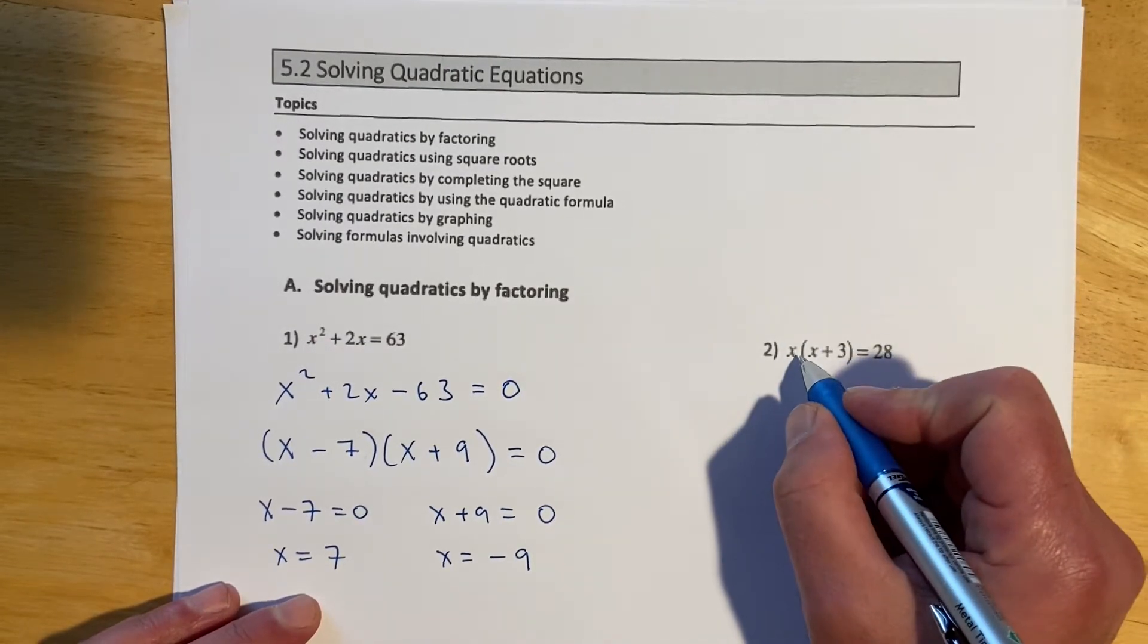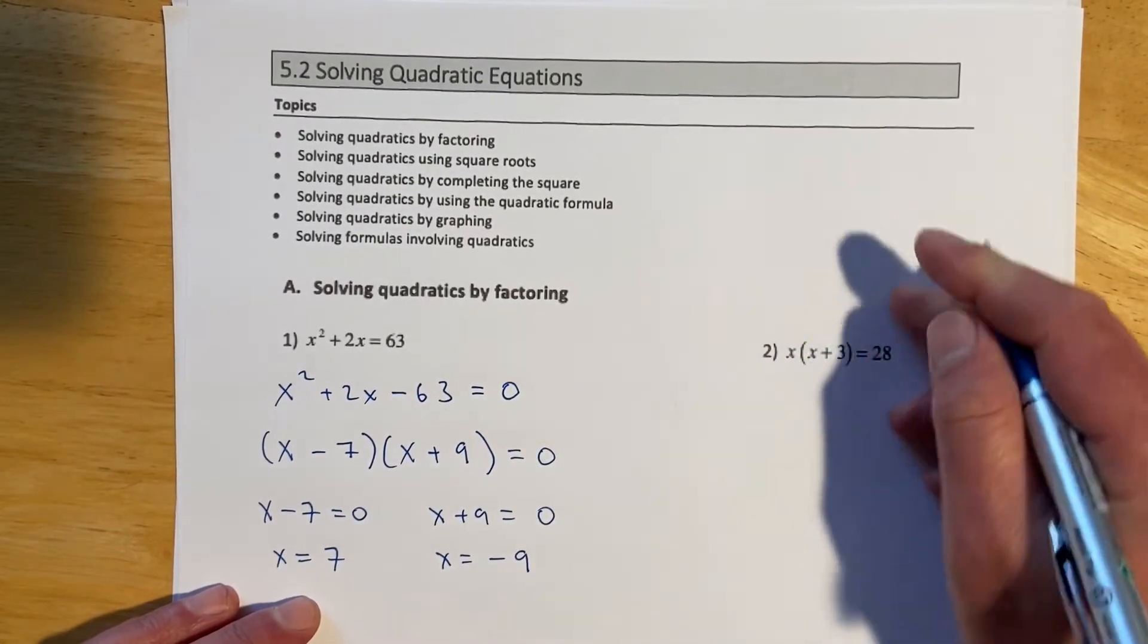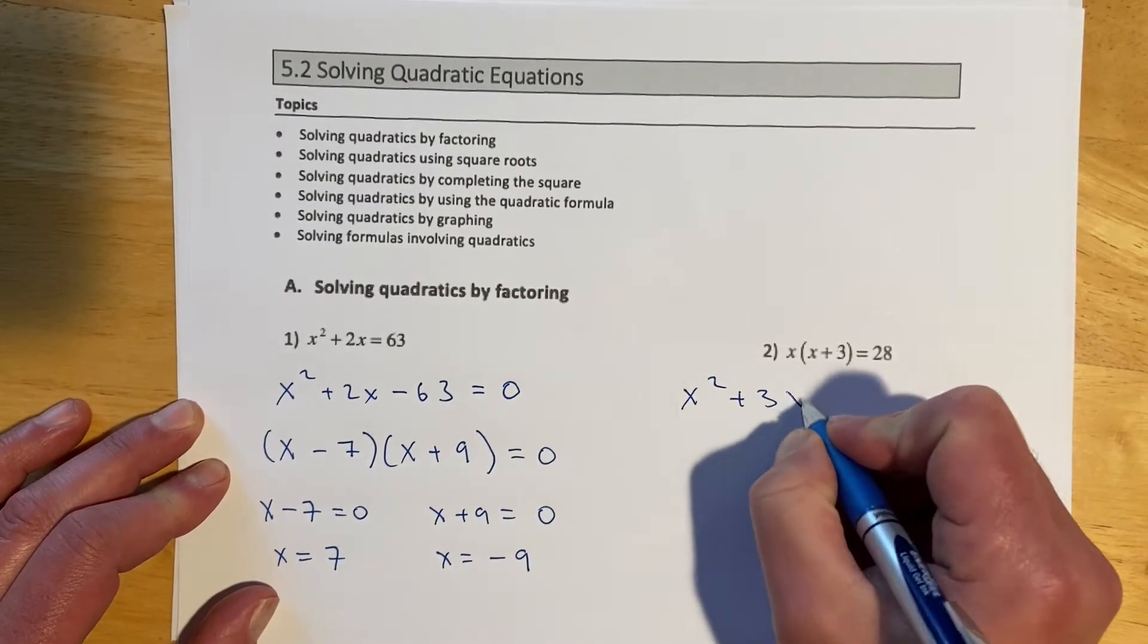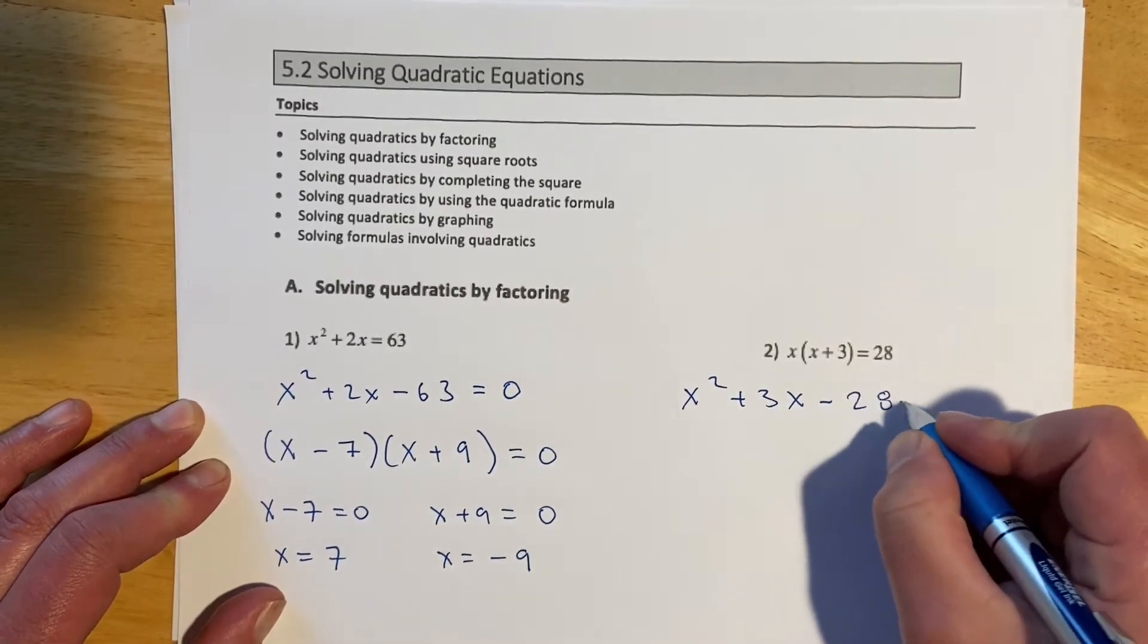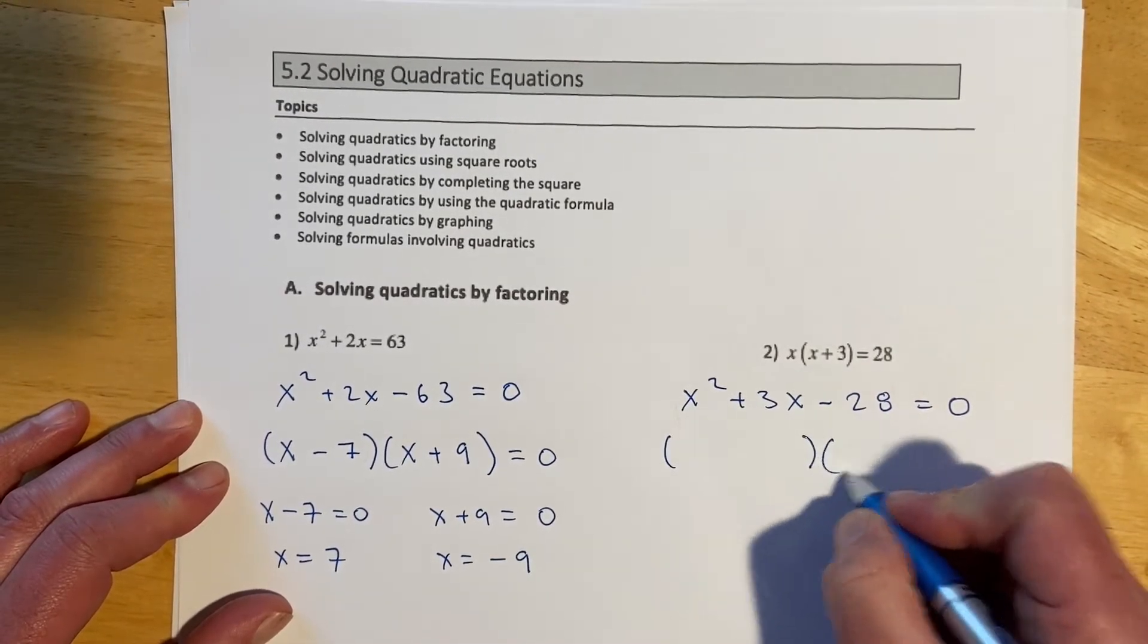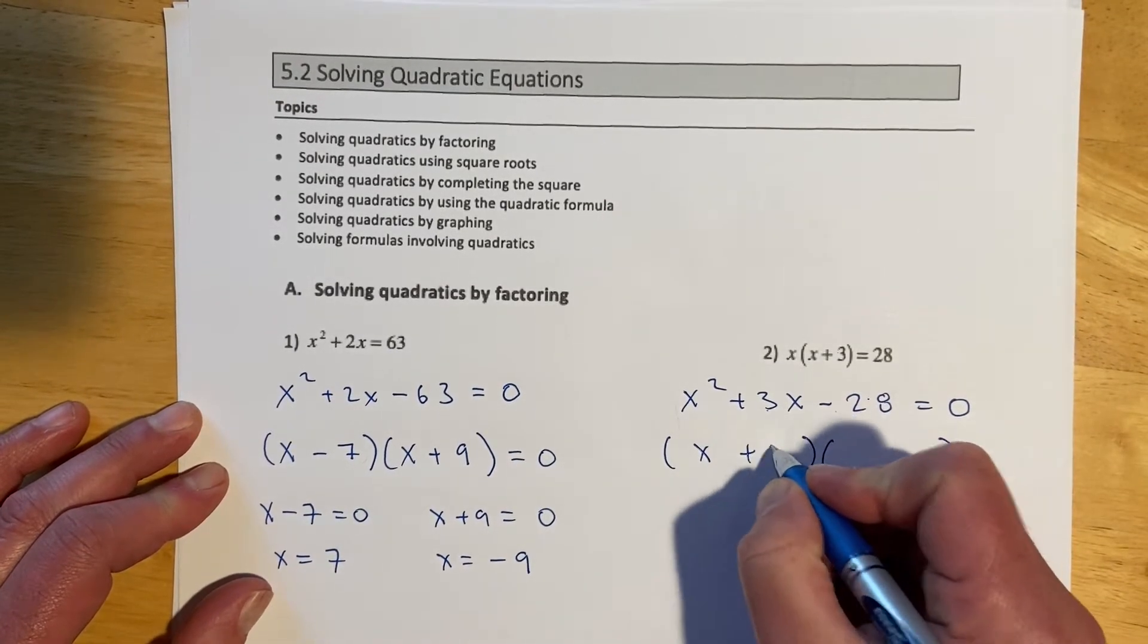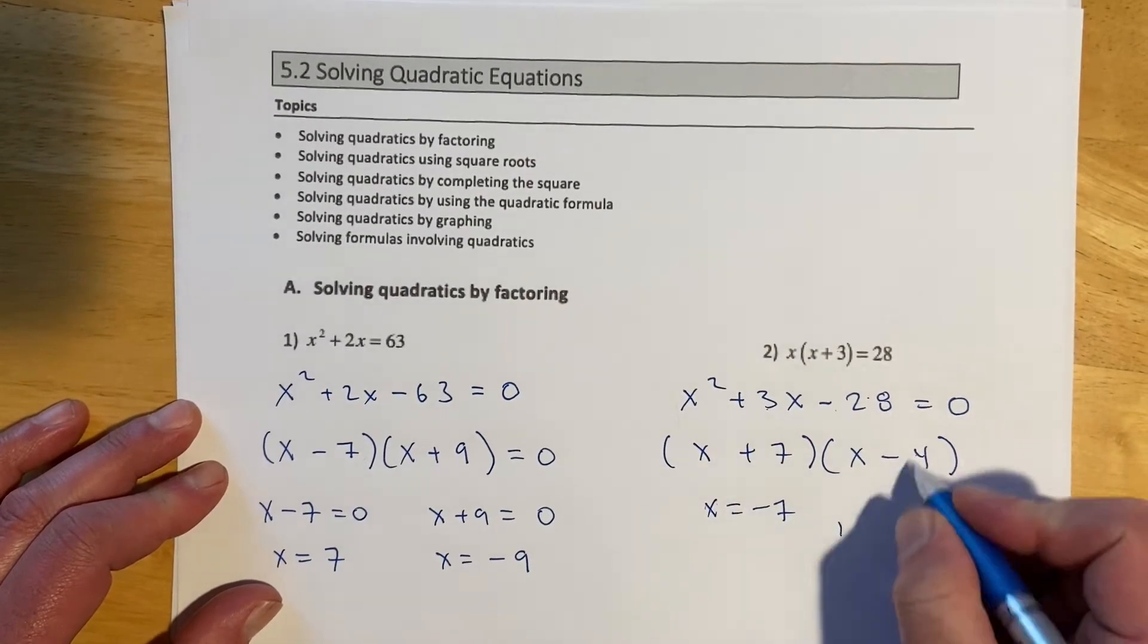But this next one, we use the zero principle here to solve, and this does not equal zero, so we need to, unfortunately, distribute, incorporate the 28 over, and then refactor. So we'll go x times x and get x², x times 3 for 3x, and then subtract 28 on both sides. So minus 28, that would leave 0 on the right-hand side. So now another negative one, so we're looking for two numbers that multiply to be 28 that are 3 apart, so 7 and 4 jump out, so positive on the 7, negative on the 4, and so x would be -7 or 4.